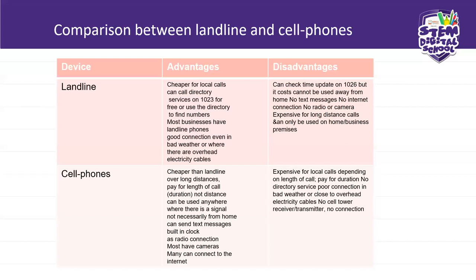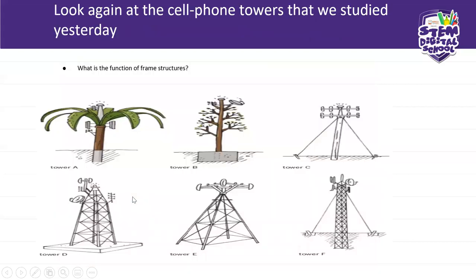There is no directory service for cell phones — you cannot get a cell phone number you've forgotten by calling a service provider. There is also poor connection in bad weather or close to overhead electricity cables. If there is no cell tower receiver or transmitter in your area, then you have no connection — like we do have that problem in rural areas where towers are not installed. Those are the advantages and disadvantages.